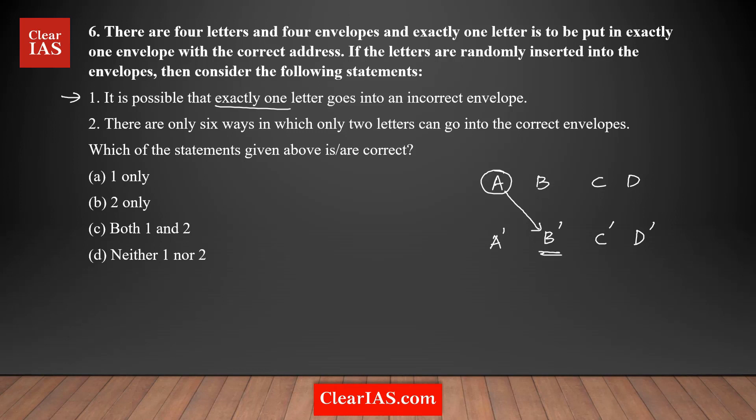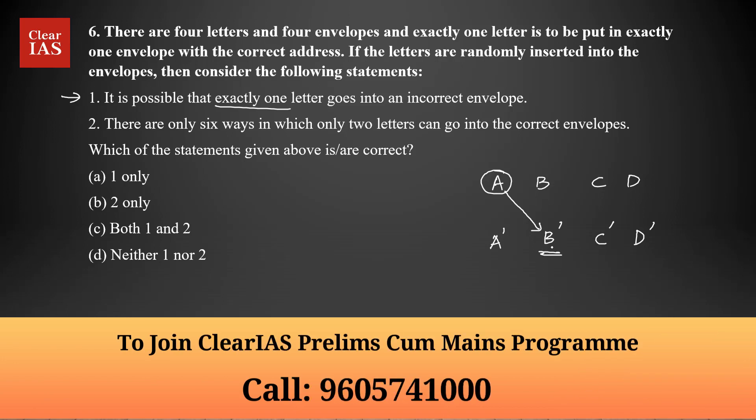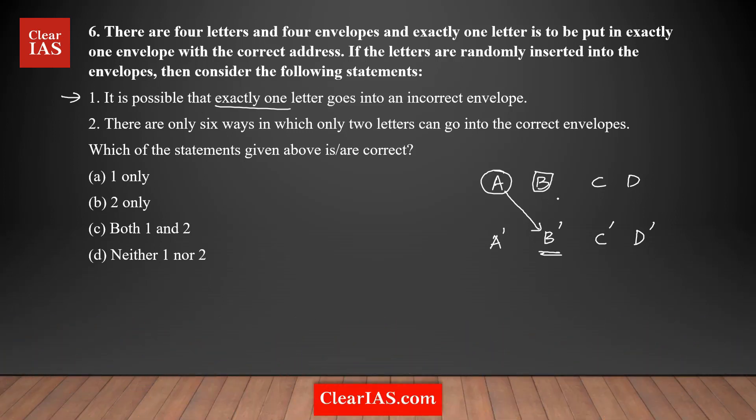So letter A is going to an incorrect envelope B dash. Actually letter B should be going to B dash, right? Right now B should go to any one of the other envelopes. So definitely we can say that more than two letters will go to incorrect envelopes. It's common logic. Because if A is going to a different envelope, let's say B dash, there should be a B here that is supposed to go to B dash should go to another envelope, which will be an incorrect envelope by default. So definitely more than one letter will go to an incorrect envelope. So we can clearly say that statement one is not true. So option A is gone, as well as option C is eliminated.